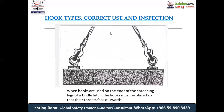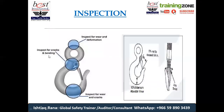Inspection parameters for hooks: no cracks are acceptable, anywhere. No wear and tear or crack is acceptable, no deformation. Any D-shaping or hook angle exceeding 10% means the hook is no longer usable. If the safety latch or clip is missing, it's also not usable. Your answer must be a straightforward yes or no — no compromise.